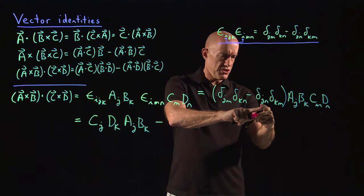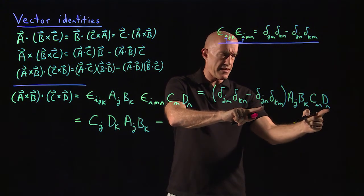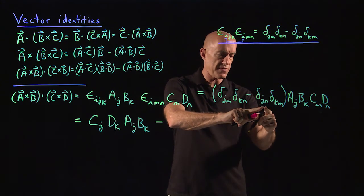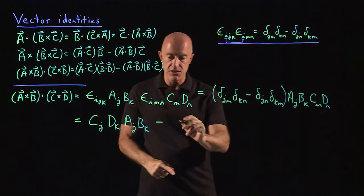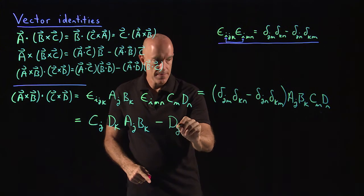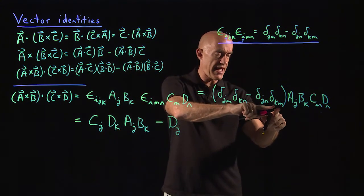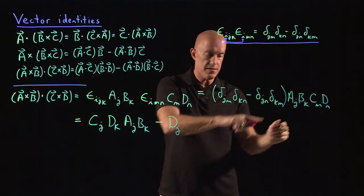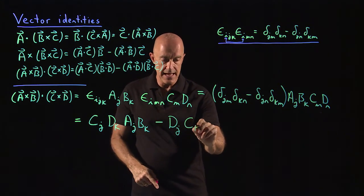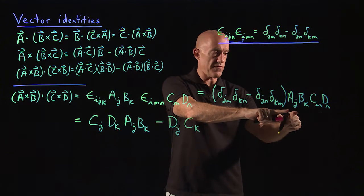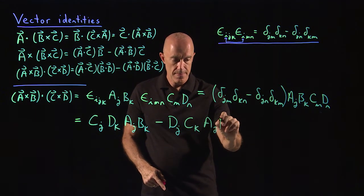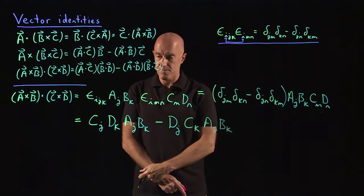Minus the delta_jn, d_n. When we sum over n becomes d_j. So this first delta becomes d_j. And delta_km times c_m becomes c_k. So we have a c_k. And what's left over is a_j b_k.